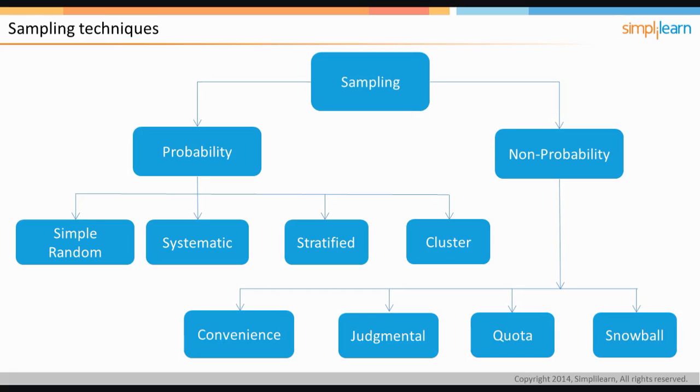Next, we have quota sampling. Quota sampling may be viewed as two stages of judgmental sampling. The first stage is to develop control categories or quotas of population elements so that different groups are represented in the total sample. In the second stage, the sample elements are selected based on convenience or judgment to fill within the quota.